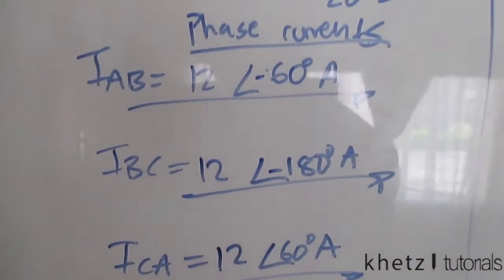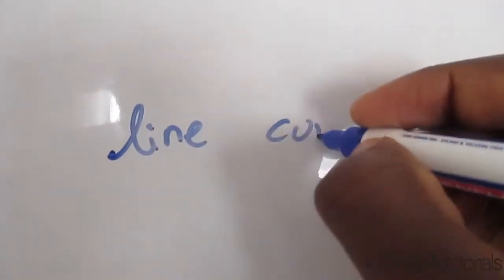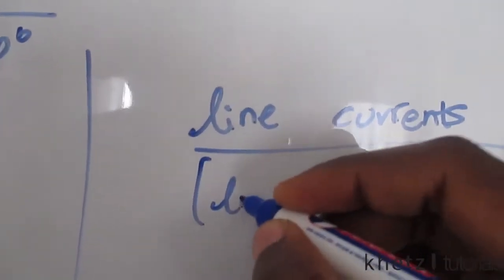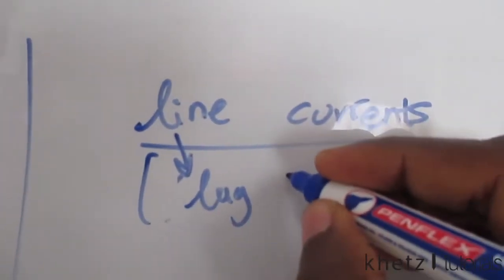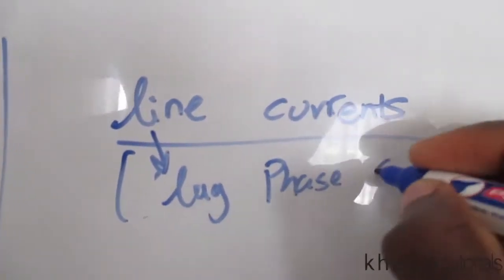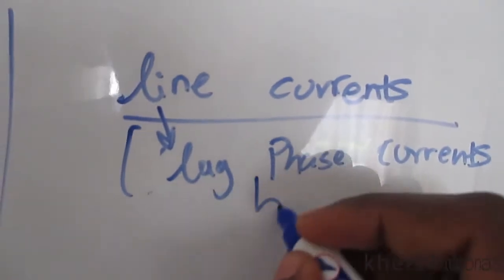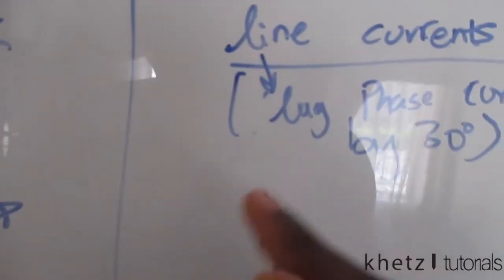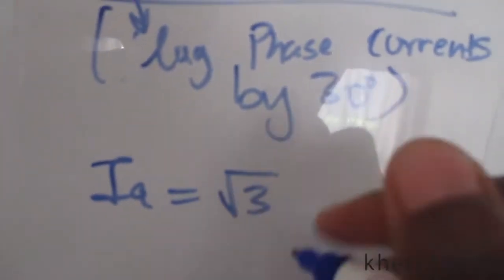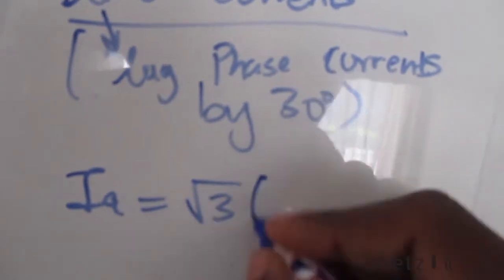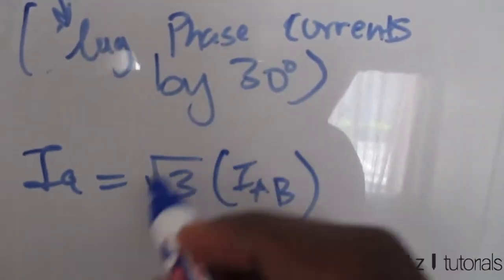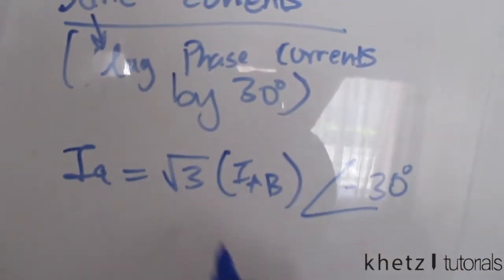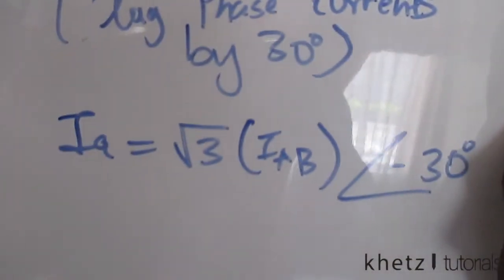We're basically done with all phase currents and can move on to line currents. For a Y-delta connection, the line currents lag the corresponding phase currents by 30 degrees. The relationship is: line current IA equals square root of 3 times the magnitude of IAB, then subtract 30 degrees from the angle of the corresponding phase current.